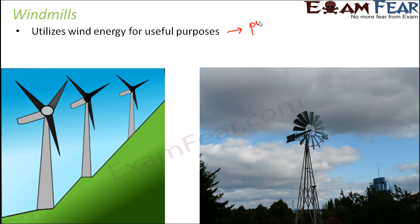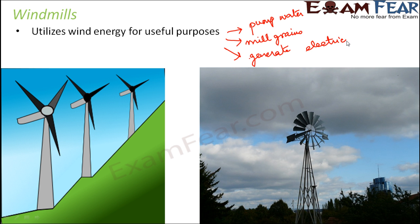Wind energy can be used to pump water, to mill grains, and to generate electricity. A wind mill has blades that are structured so they are not very heavy, and as the wind blows, the blades start rotating — just like a fan. Wind pumps work similarly, with rotating blades whose mechanical energy can be used to pump water from below or to mill grains. All of these useful purposes happen because of the presence of wind, which is nothing but moving air.